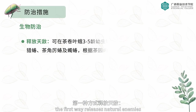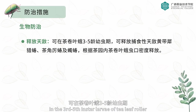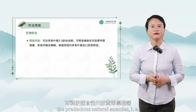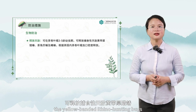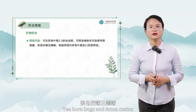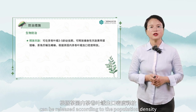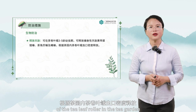The first way is to release natural enemies. During the third to fifth instar larvae of tea leaf roller, predaceous natural enemies — for example, the yellow-banded rhino hunting bugs, tea horn bugs, and armacustus — can be released according to the population density of the tea leaf roller in the tea garden.